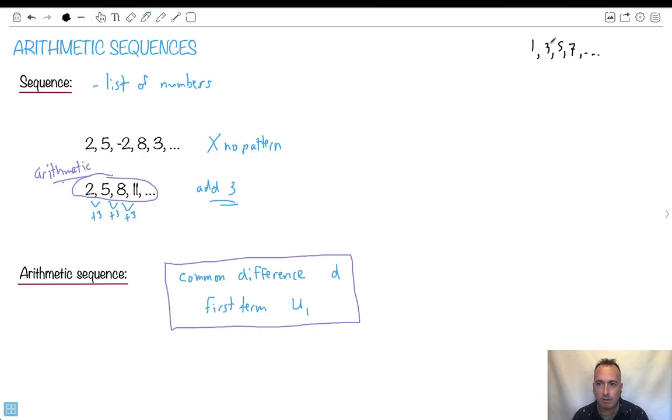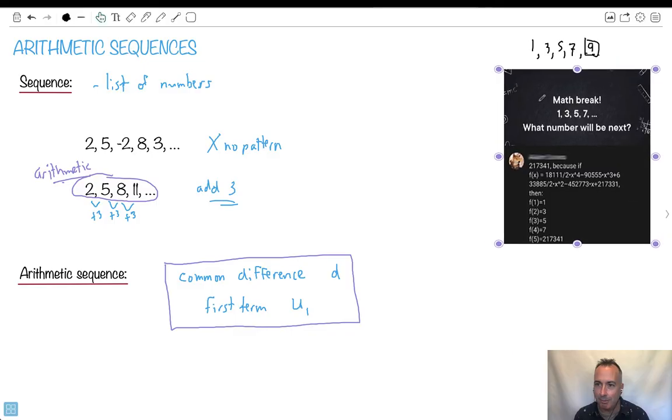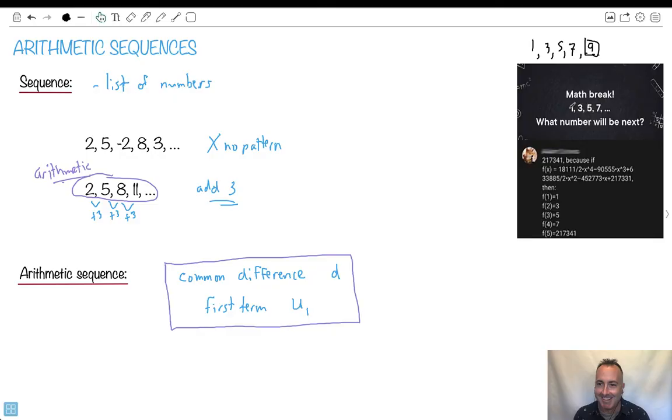You would think it's arithmetic, wouldn't you? With a common difference of 2. So you'd think, oh, then the next number must be 9, right? And here what I like is they're really playing with this, just saying nope.